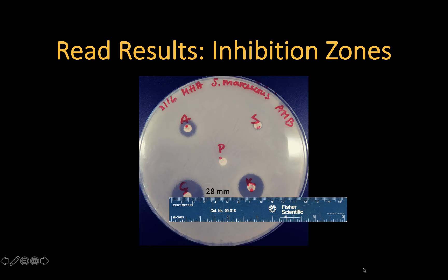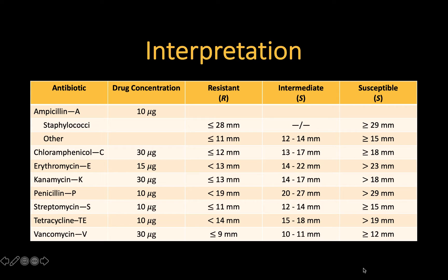This video covers how to interpret the results of the Kirby-Bauer test. In this example, the inhibition zone around the chloramphenicol disk is 28 millimeters. To interpret the results, the number is compared to a table.